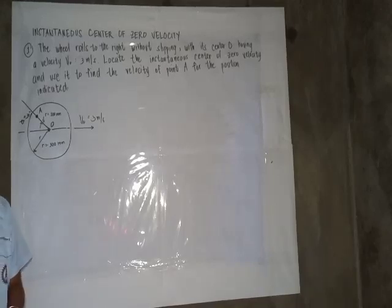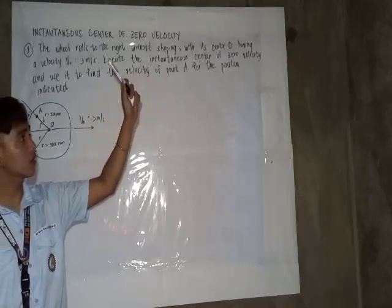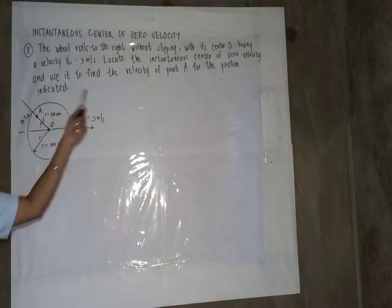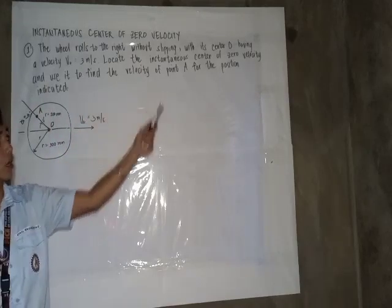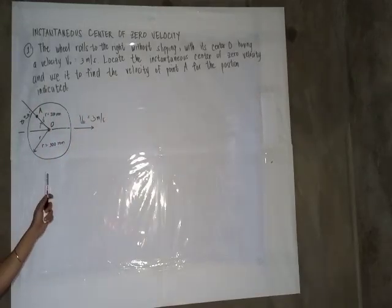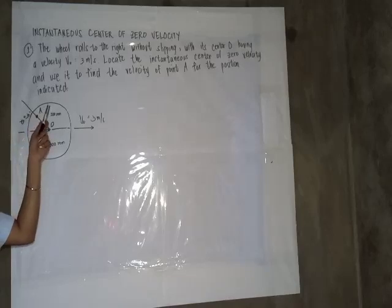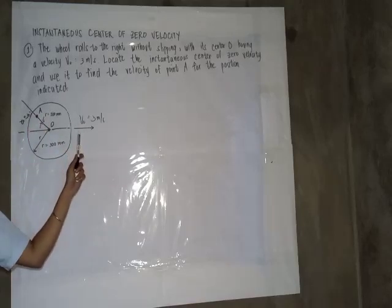So instead of the problem, we have to locate the instantaneous center of zero velocity and use it to find the velocity at point A. So we have there at the figure, we have point A, meron tayong given initial velocity.